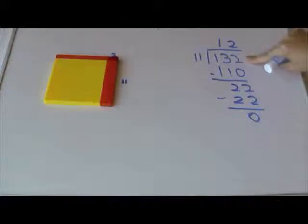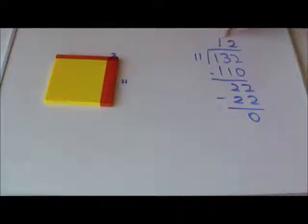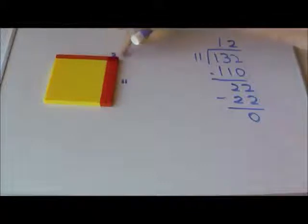So, I have made a rectangle out of 132 with 11 on one side, right here, 10 and 1, it's 11 and the other side is 12, 10 and 2.